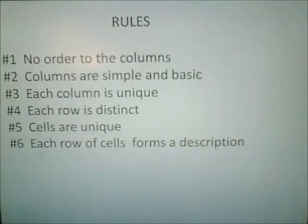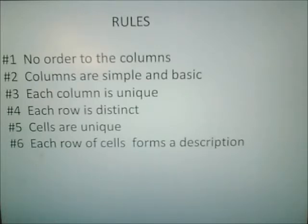There are rules to follow. Rule one: no order to the columns. Rule two: columns are simple and basic. Rule three: each column is unique. Rule four: each row is distinct. Rule five: cells are unique. Rule six: each row of cells forms a description.